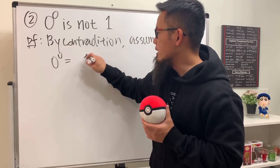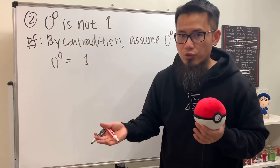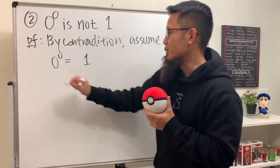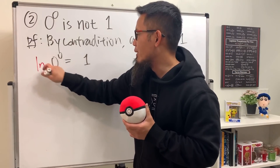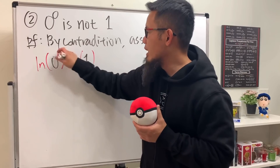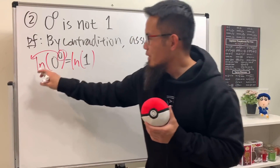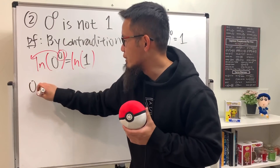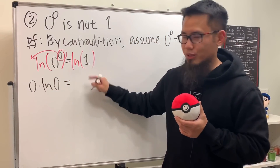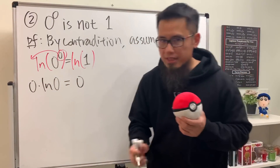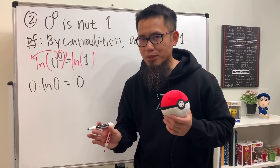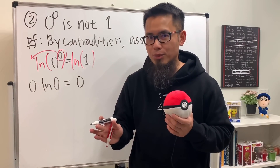This is in exponential form, so let's take the natural log of both sides. We can bring the power to the front: this gives us zero times ln(0) on the left, and ln(1) equals zero on the right. We have zeros on both sides, but we are not going to divide by zero.